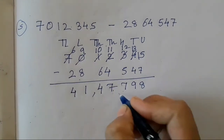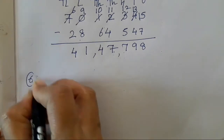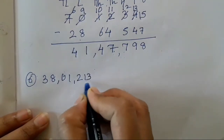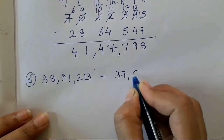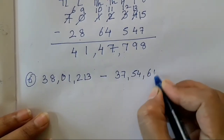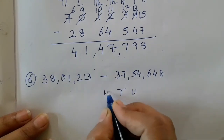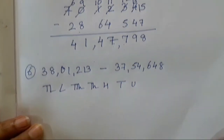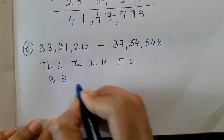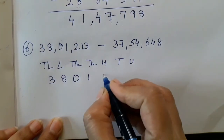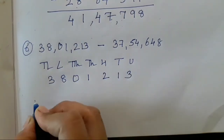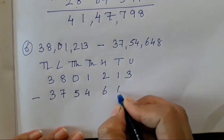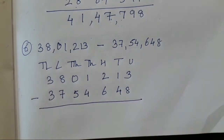Add your commas. Now the 6th and last sum is 38,00,1213 subtracted with 37,54,648. So units, 10s, 100, 1000, 10,000, lakh and 10 lakh. So 38,00,1230 subtracted with 37,00,54,648.